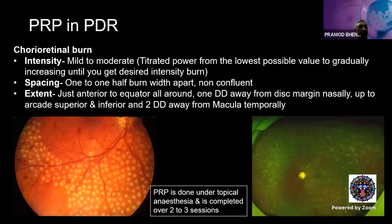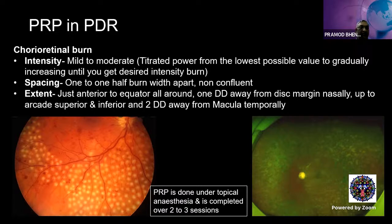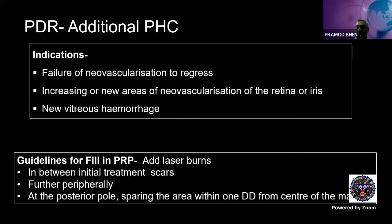PRP technique uses mild-to-moderate intensity burns, spaced one to one-and-a-half burn widths apart, non-confluent, extending from the equator to 360 degrees — one disc area from the nasal disc margin up to the arcade superiorly and inferiorly, and two to three disc areas away on the temporal side. This is completed over two to three sittings. Fill-in or additional PRP is added when neovascularization fails to regress, new areas of new vessels appear, iris neovascularization develops, or there is associated vitreous hemorrhage. Burns should be placed between initial scars, extending peripherally and toward the posterior pole — now one disc area from the center of the macula.